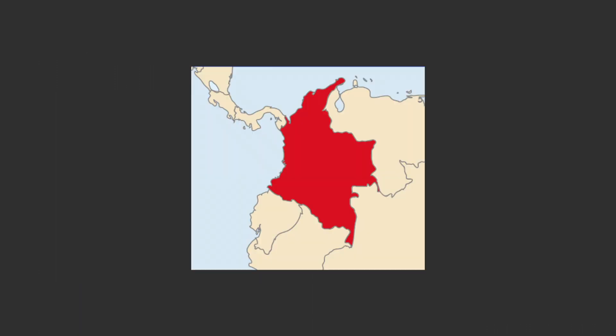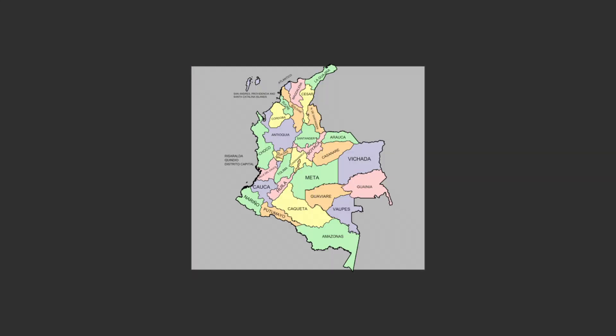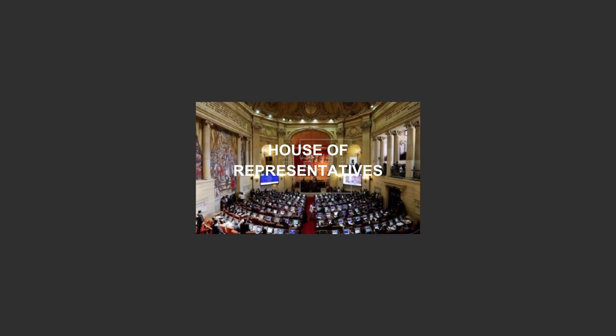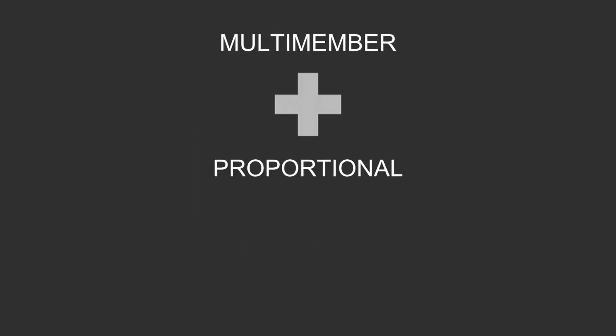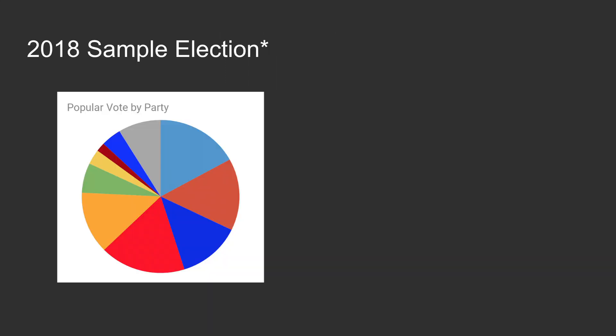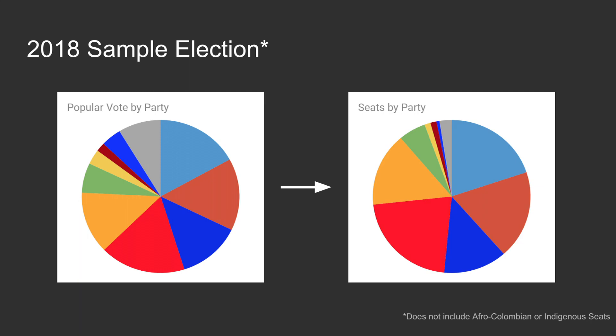However, many raise the point against proportional representation that they like local representation, having people that represent your locality. Colombia is a country of 50 million people. So as Colombia is already divided into many departments, they use these as the local boundaries in elections for the House of Representatives. However, since every constituency sends multiple members and each constituency uses proportional representation, this ends up being a very fair representation of the people's vote, as popular vote taken as a whole ends up being representation of seats in the House, more or less.